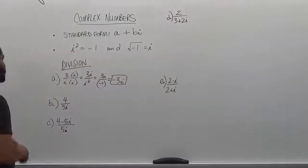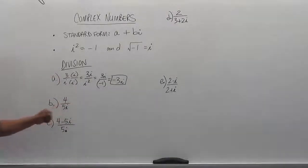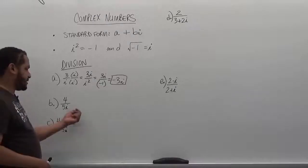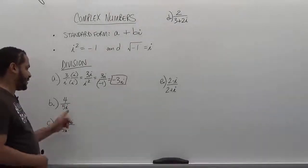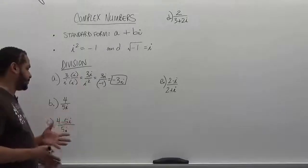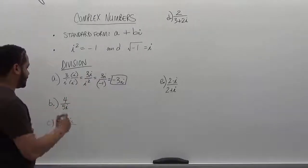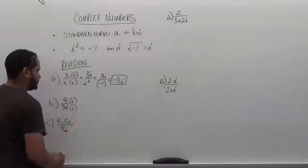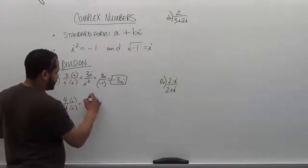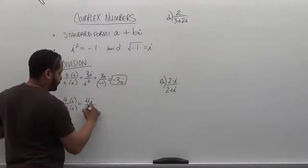Now let's move on to the second problem. We have 4 divided by 5i. To divide this, we just want to multiply the top and bottom by the i term, because to get rid of the i from the denominator, we just have to multiply top and bottom by i.